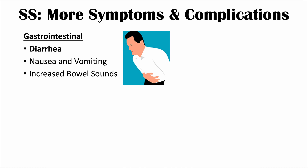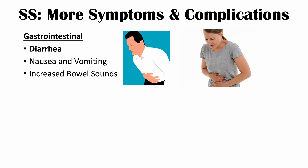There are other signs, symptoms, and complications affecting the gastrointestinal system. Since serotonin regulates GI motility, excess serotonin leads to GI issues. Diarrhea is a key finding — increased serotonin increases GI motility. Nausea, vomiting, increased bowel sounds, and abdominal pain can also occur. GI symptoms are very important to recognize in serotonin syndrome.